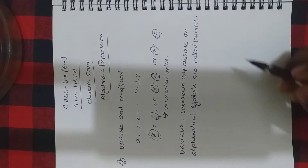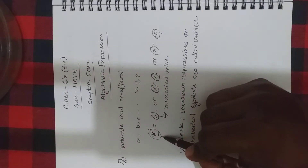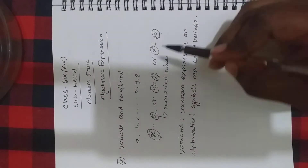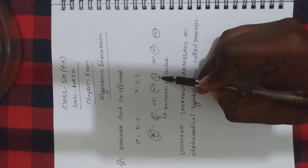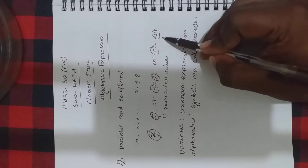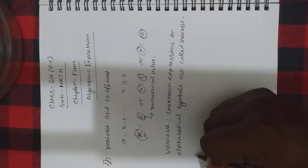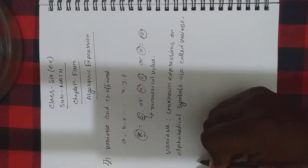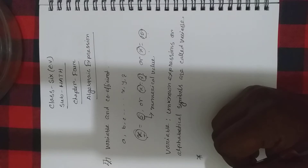Unknown expression — Aujana Rashi — or alphabetic symbols are called variable. Here, X is an alphabetic symbol. 5 is a numerical value, 7 is a numerical value. So, variable — variable is such a symbol of which meaning is changeable.